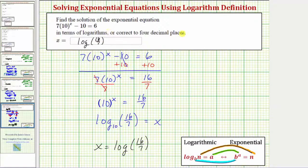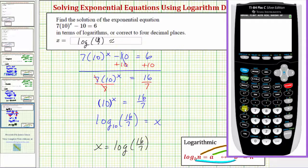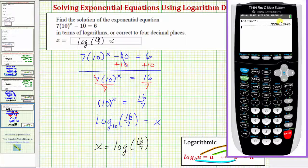Let's also get our decimal approximation to four decimal places. Here's the common log button. So log 16 divided by 7, close parenthesis and enter. To four decimal places, we have approximately 0.3590.